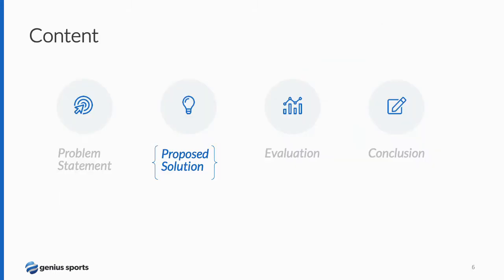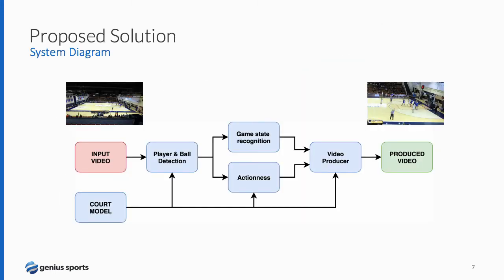Our system is composed of five main components. As you can see in the diagram, the input of the system is a full view of the basketball game and the output is the produced video that is framing the main action. The components are: court model, player and ball detection, game state recognition, action block, and the video producer. So let's talk about them in detail.